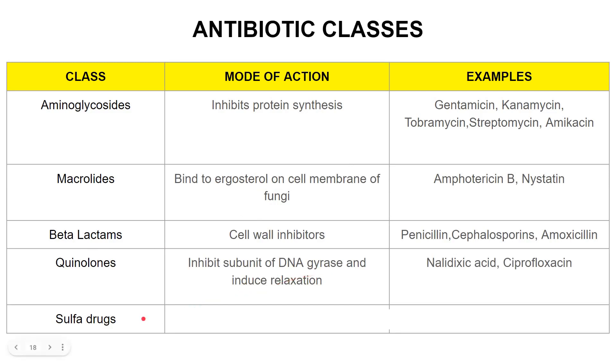Next we have sulfa drugs. They inhibit the synthesis of folic acid. Examples include trimethoprim and prontosil.